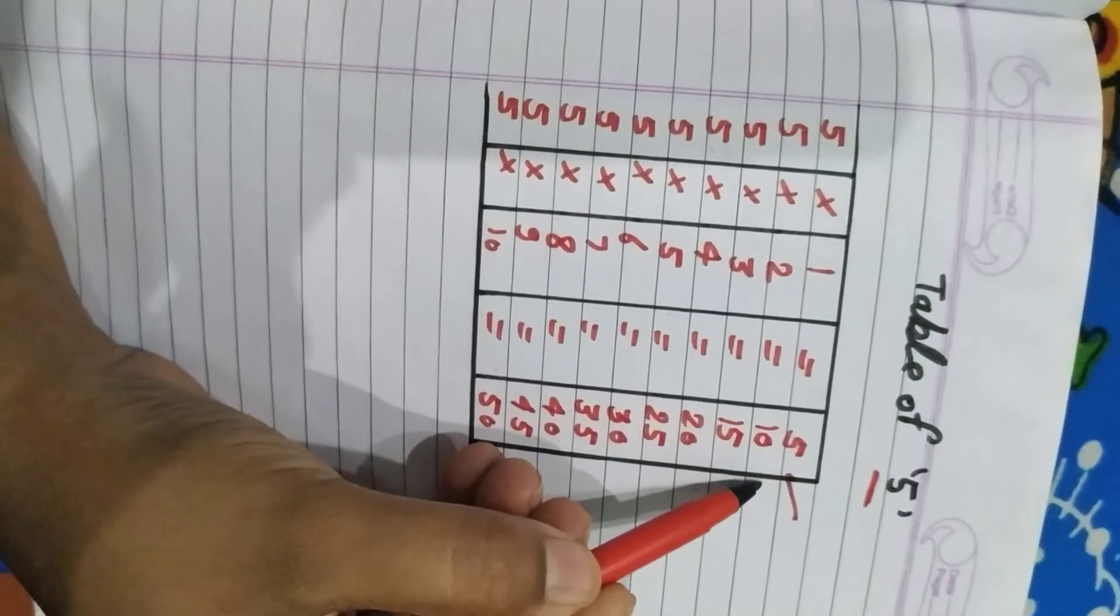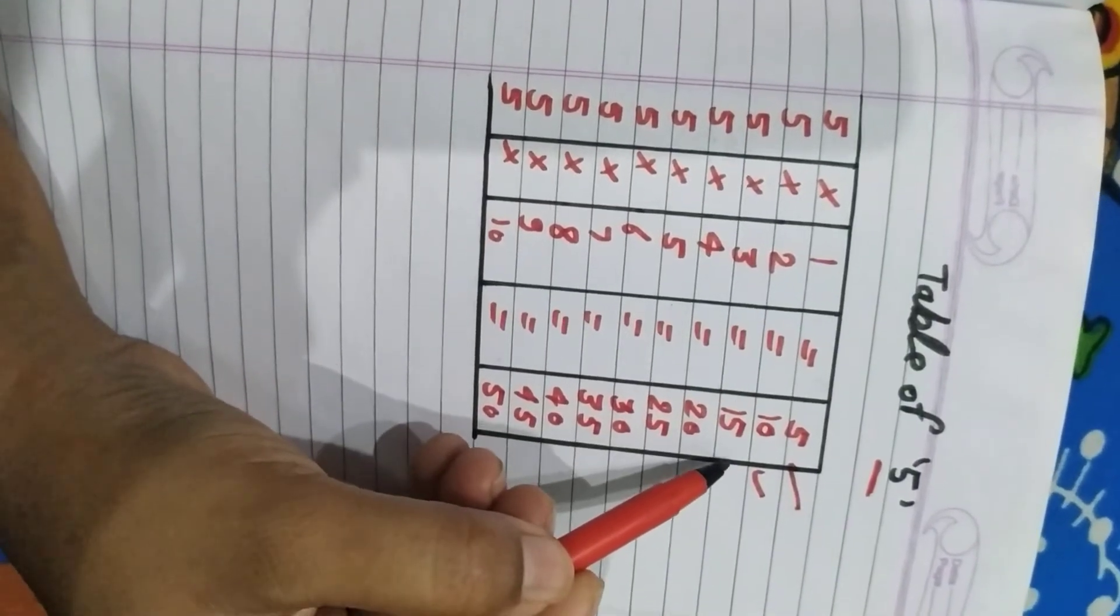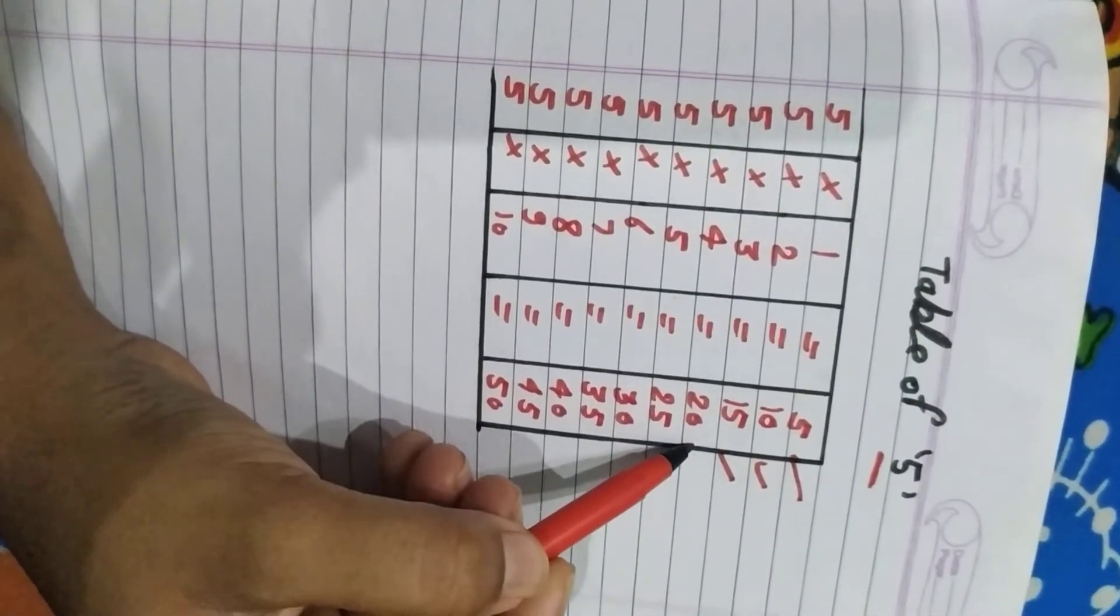Five one ja five. Five two ja ten. Five three ja fifteen. Five four ja twenty.